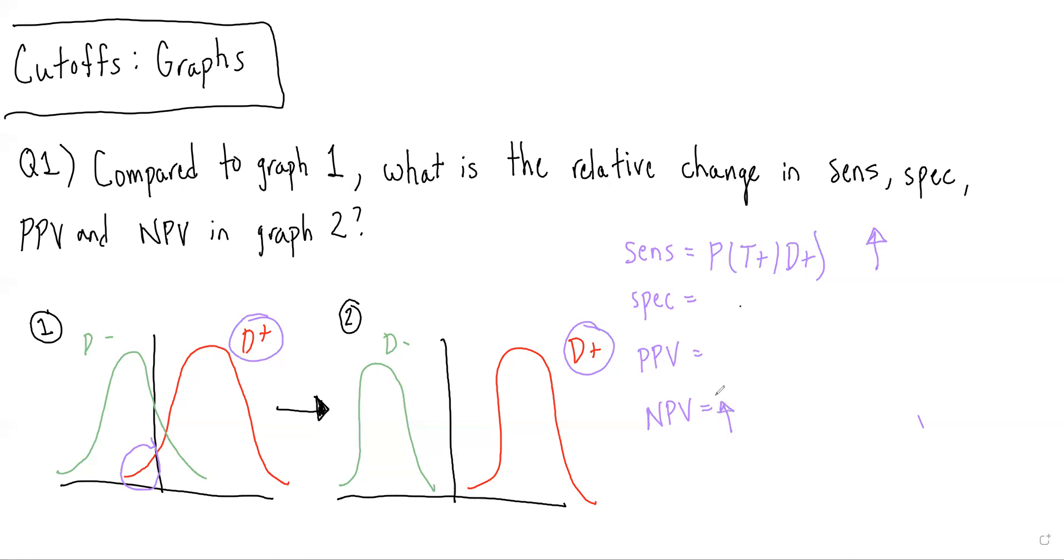Now moving on to specificity, remember this is the probability of getting a negative test result given you do not have the disease. So in graph one, we can see that there is this portion of the disease-negative curve that lies to the right of the cut-off, whereas in graph two, all of the disease-negative patients are to the left of the cut-off.